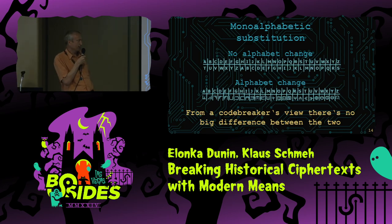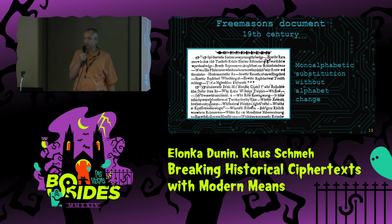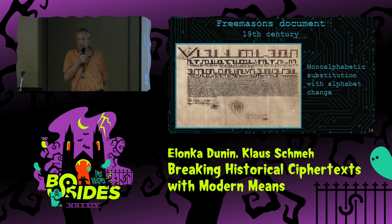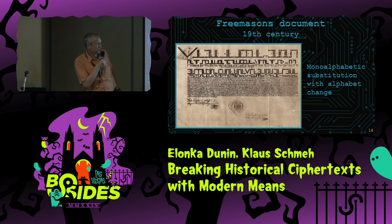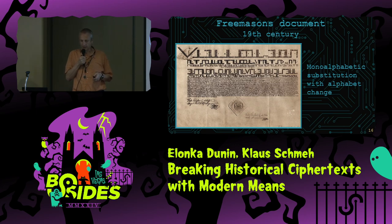From a codebreaker's view, there's no big difference between these two cases, because you can always replace the symbols you don't know with a symbol you do know, and this doesn't change the encryption as such. Here we have a Freemason document from the 19th century with no alphabet change — these are all ordinary letters, so it's a monoalphabetic substitution without alphabet change. Another Freemason's document, also from the 19th century, uses an alphabet change with strange symbols — the so-called Freemason cipher. But it's a substitution in both cases, so from a codebreaker's view, it's not much of a difference.